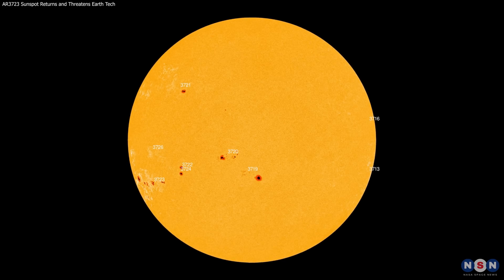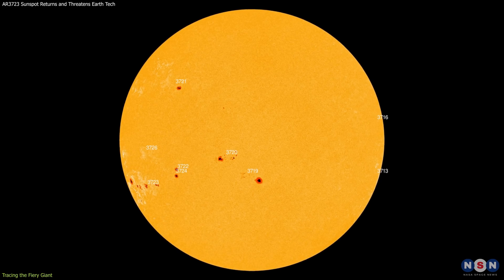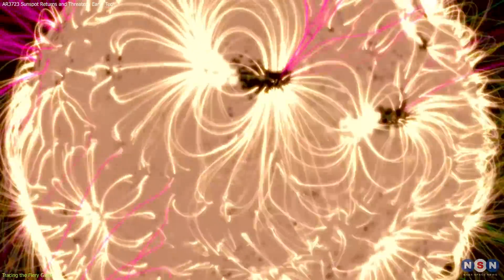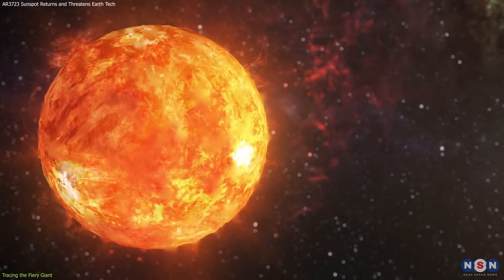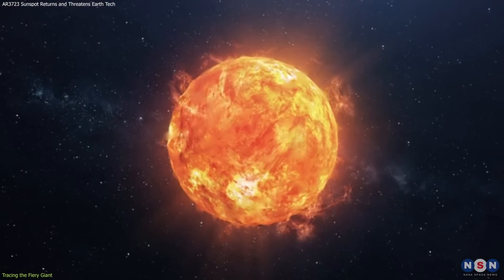Sunspots like AR 3723 are not just mere dark spots on the sun. They are regions of intense magnetic activity that can have profound effects on solar and terrestrial phenomena. This sunspot, particularly noteworthy for its unprecedented third orbit in front of Earth, provides a unique case study in solar dynamics.